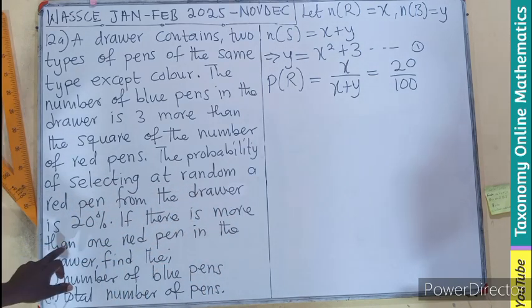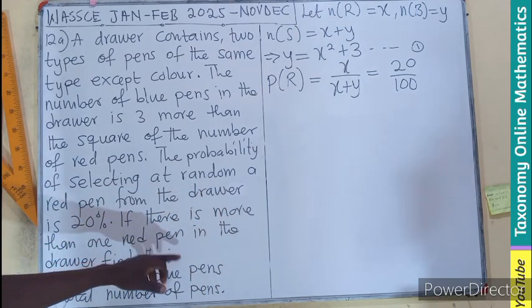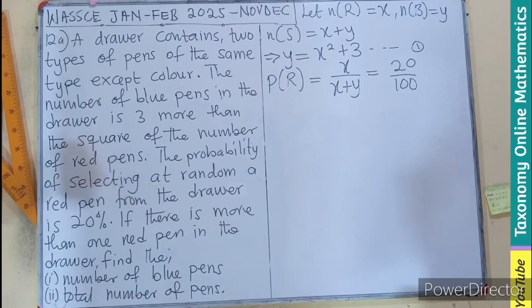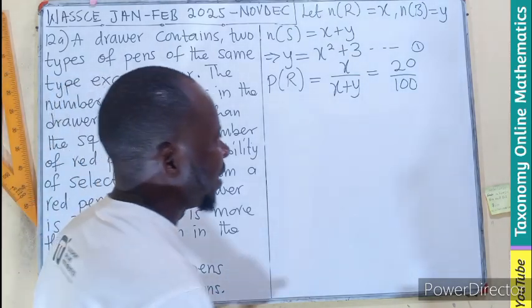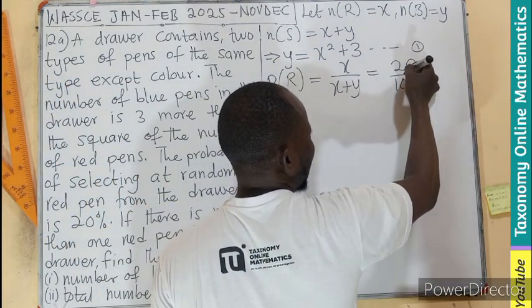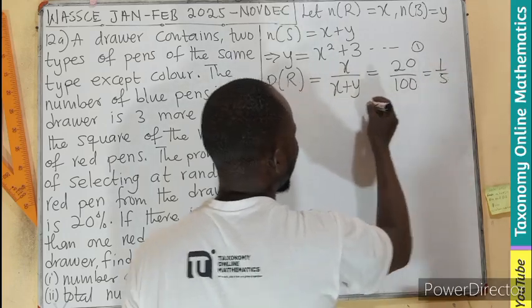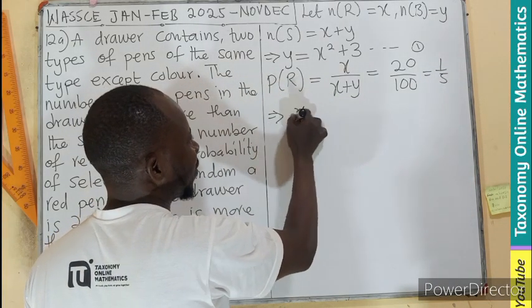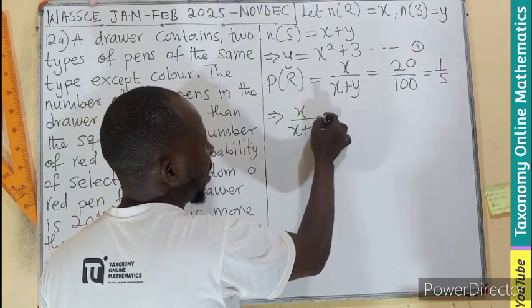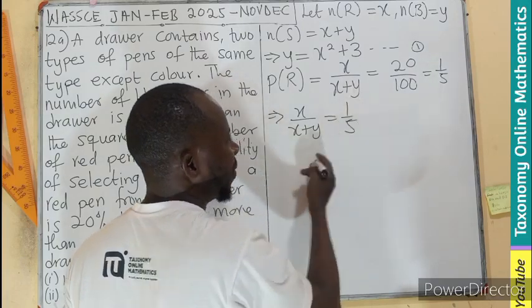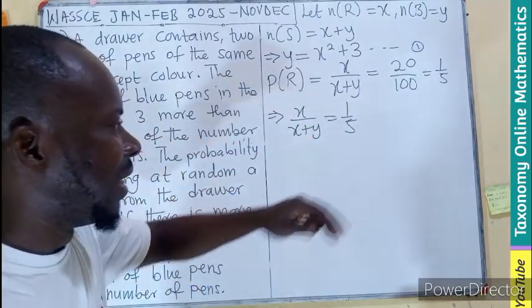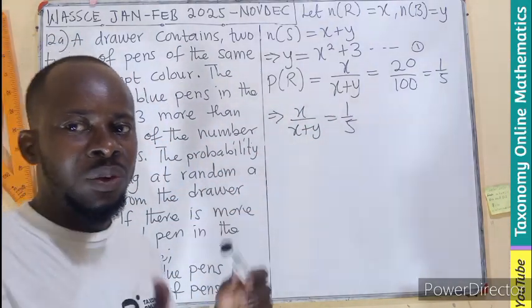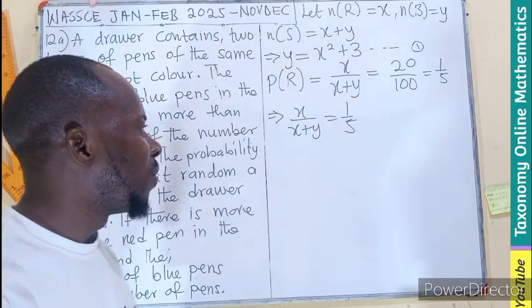If there are more than one red pen. So this is what we have. Let's see if we can cancel this further to have 1 over 5. That implies that X over X plus Y equals 1 over 5. We can rewrite this to become a linear equation without the fraction. If you cross multiply,